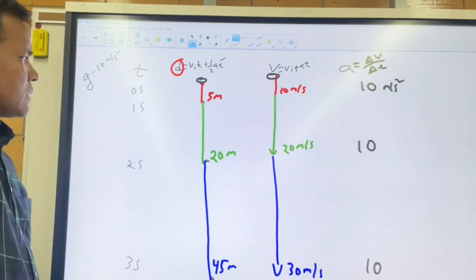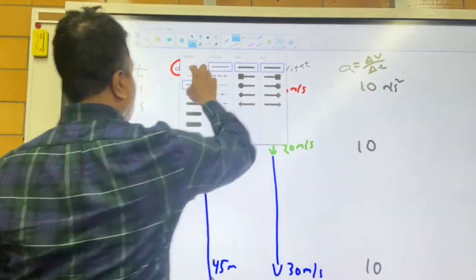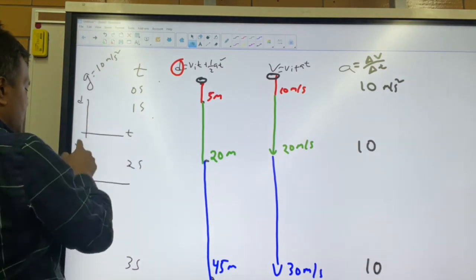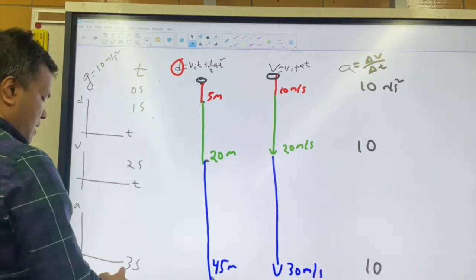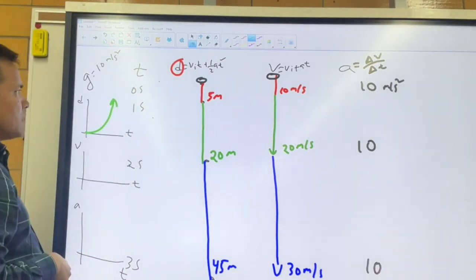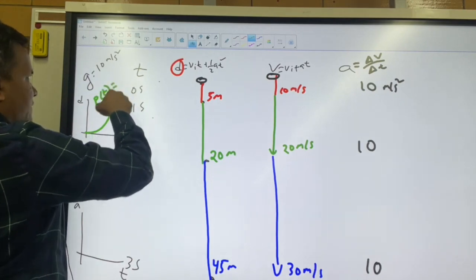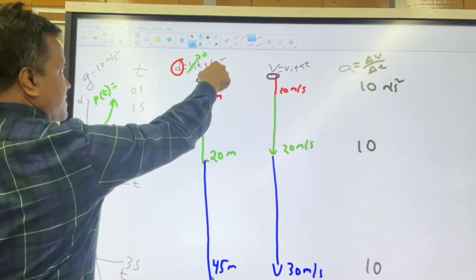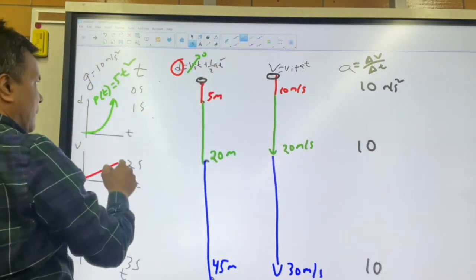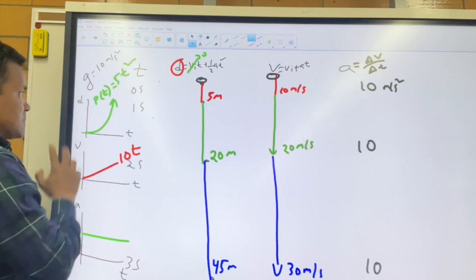Now let's draw the dt, vt, and at graphs. The dt graph is a second-degree polynomial: d(t) = 5t². The vt graph is linear: v(t) = 10t. The at graph is constant: a(t) = 10. These three graphs show the quadratic distance, linear velocity, and constant acceleration for this free-fall problem.